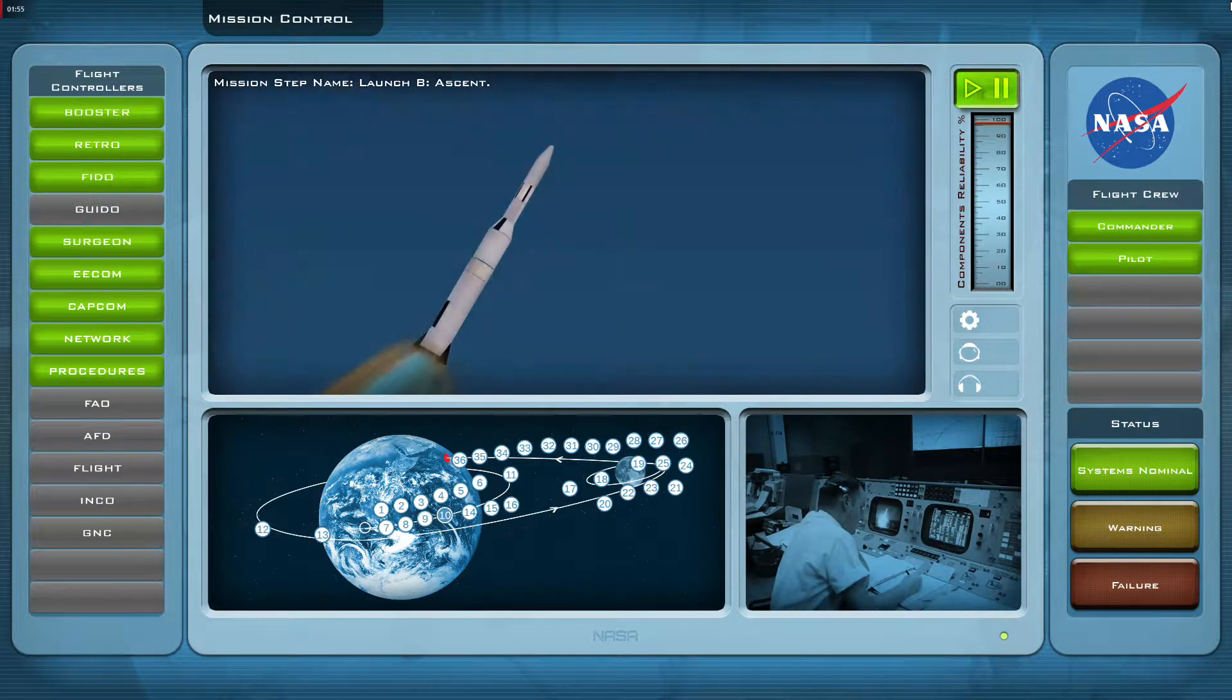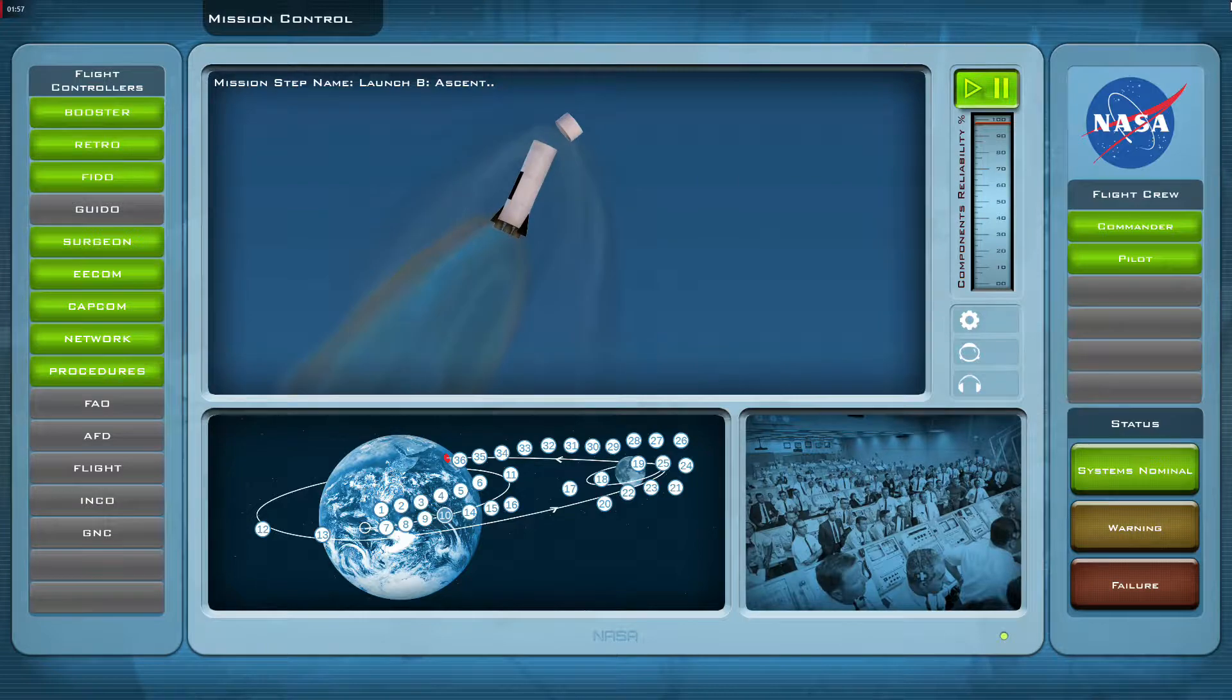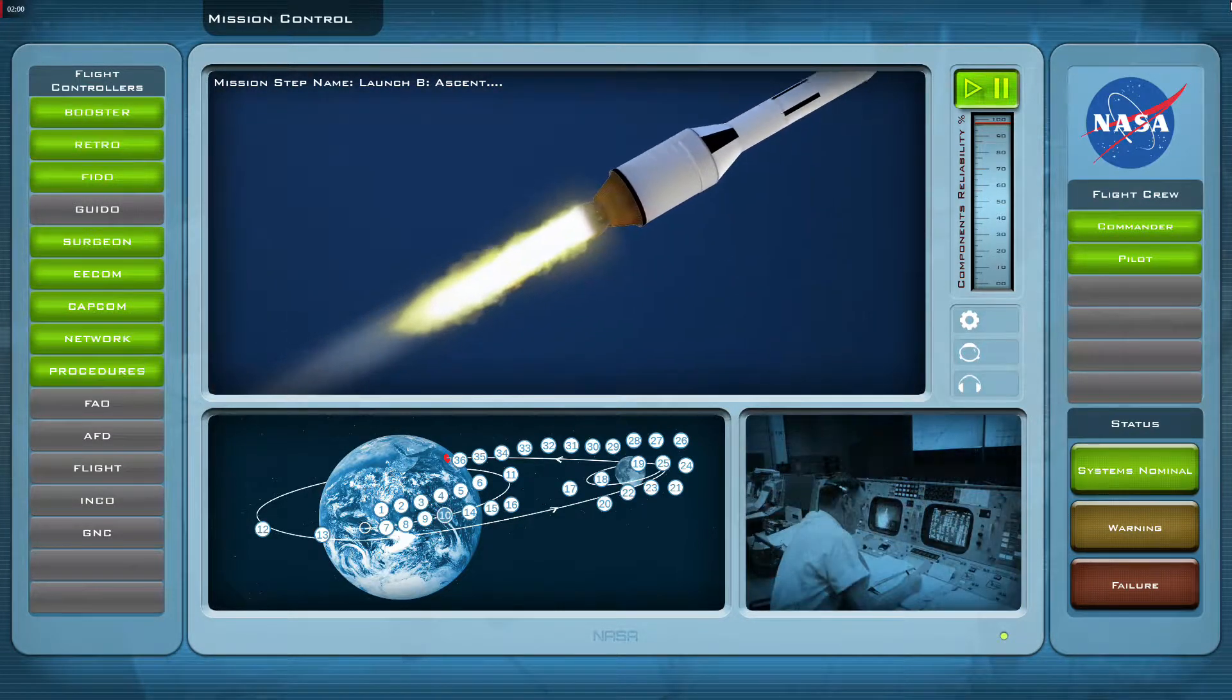There's a roll program. All right, roger roll. Light. We have second stage ignition and second stage thrust looks fine.